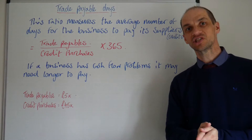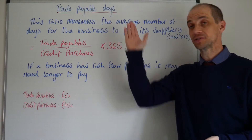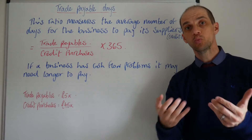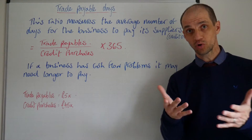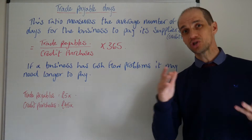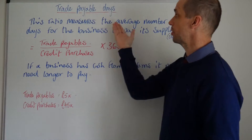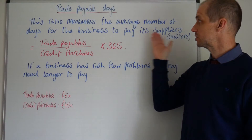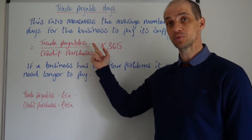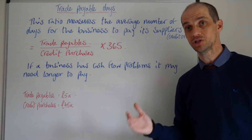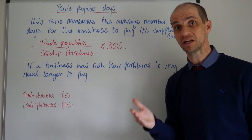Let's now look at our second efficiency ratio, which is trade payables days. When it comes to trade payables, you want to make sure that you're maintaining a good reputation with your suppliers or creditors, and that you are trying to pay them within the time frame they expect. This ratio measures the average number of days for the business to pay its suppliers or creditors. It's calculated by taking the trade payables figure, dividing that by the credit purchases, and then multiplying by 365.